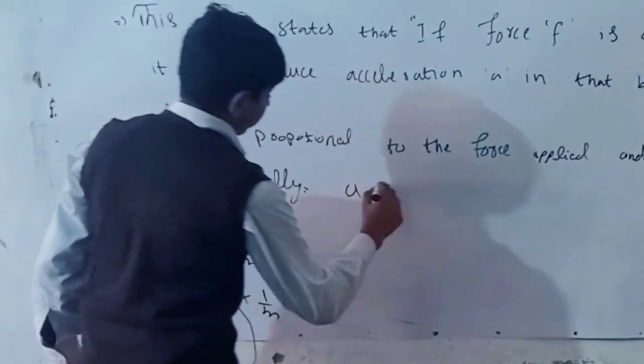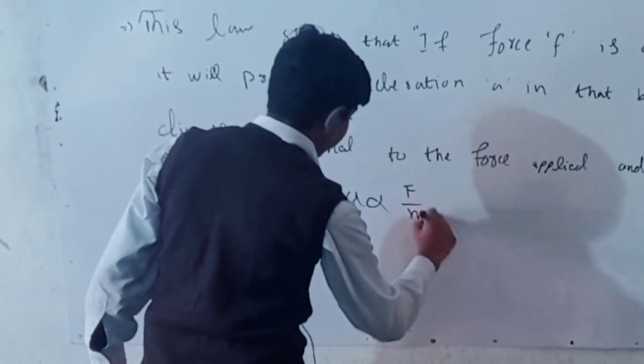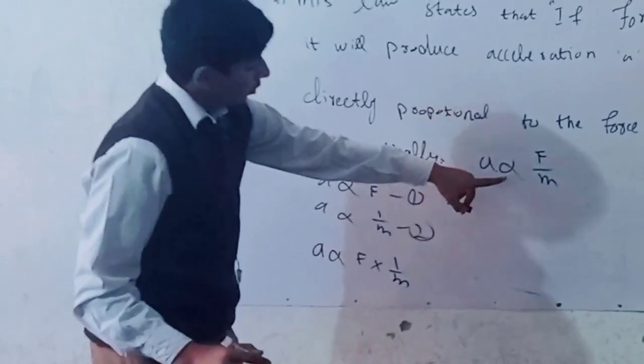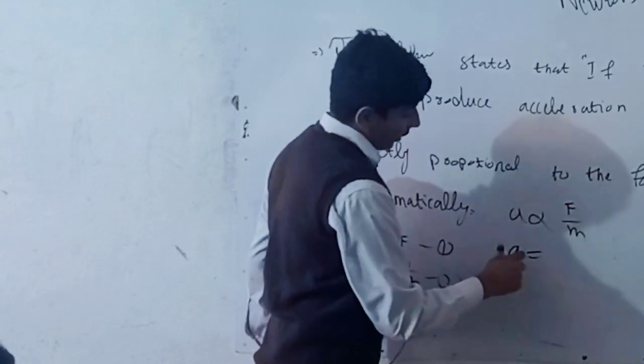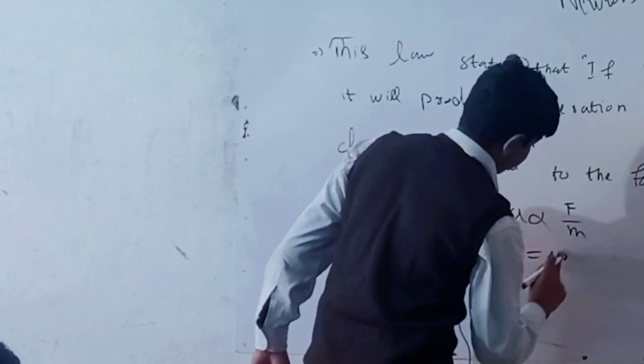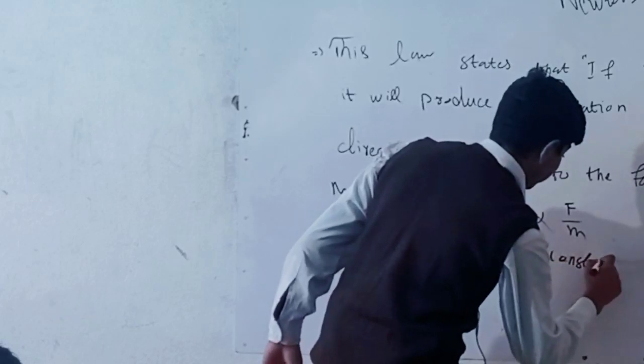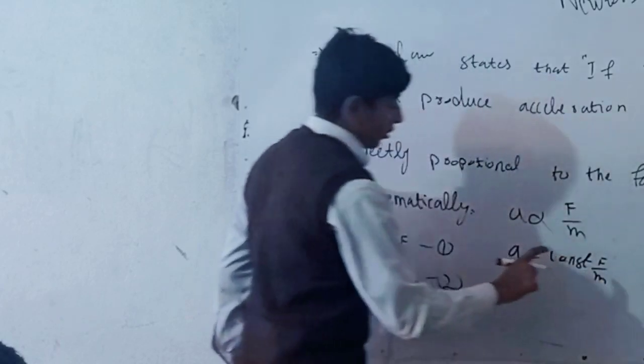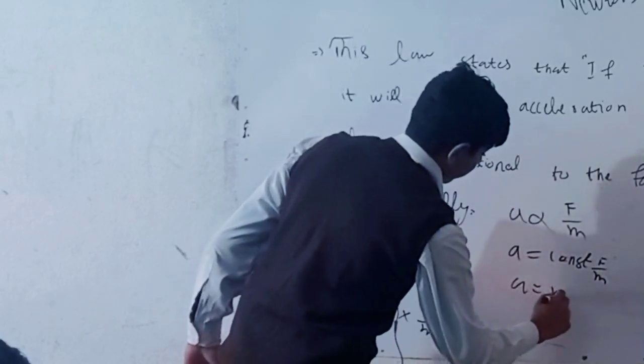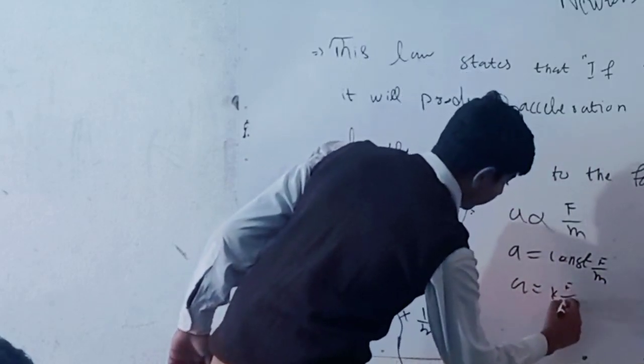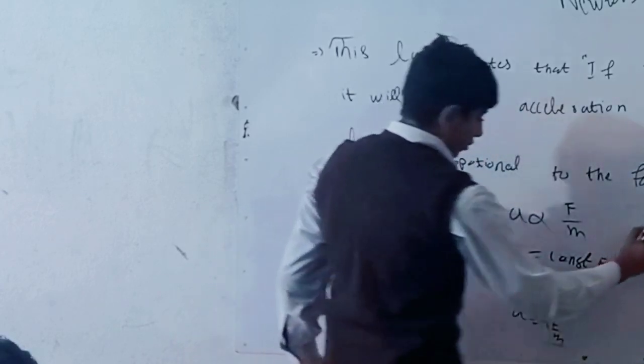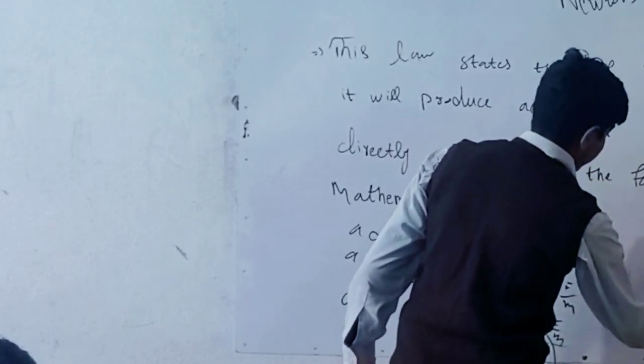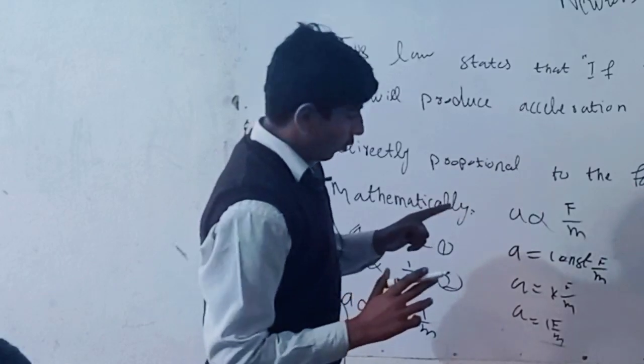inversely proportional to the object's mass. It will give us acceleration like this. Now if we want to end this constant of proportionality, we will have to put an equality sign and the constant and write the rest of the equation the same. Here the constant will be K, and the K's value will be 1, so it will